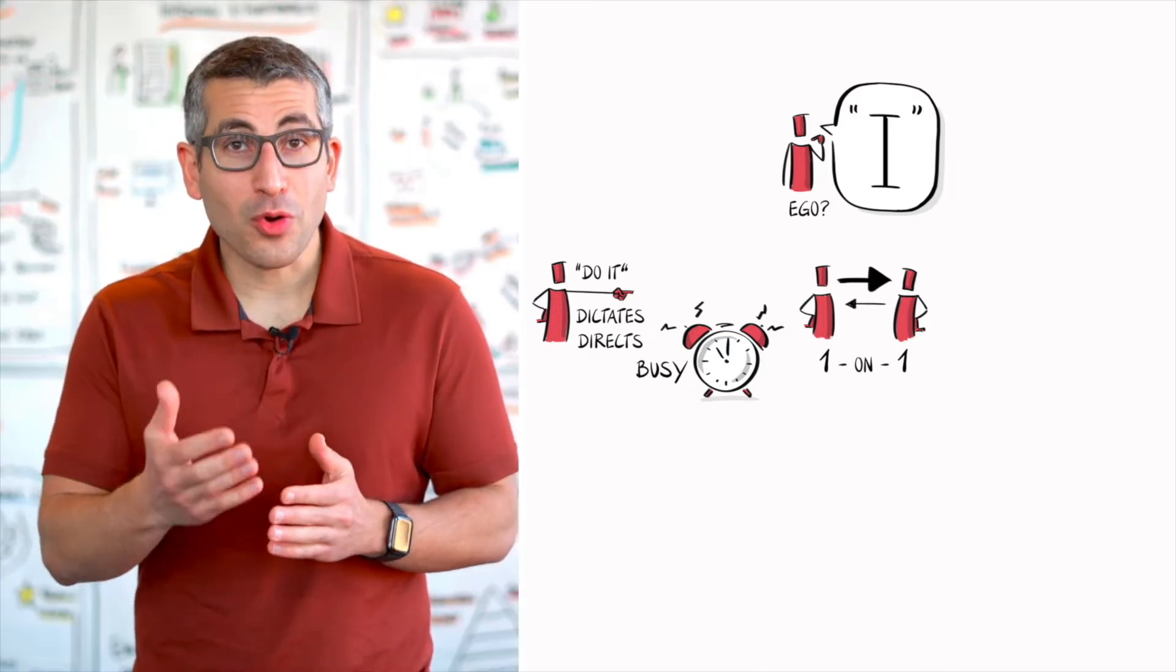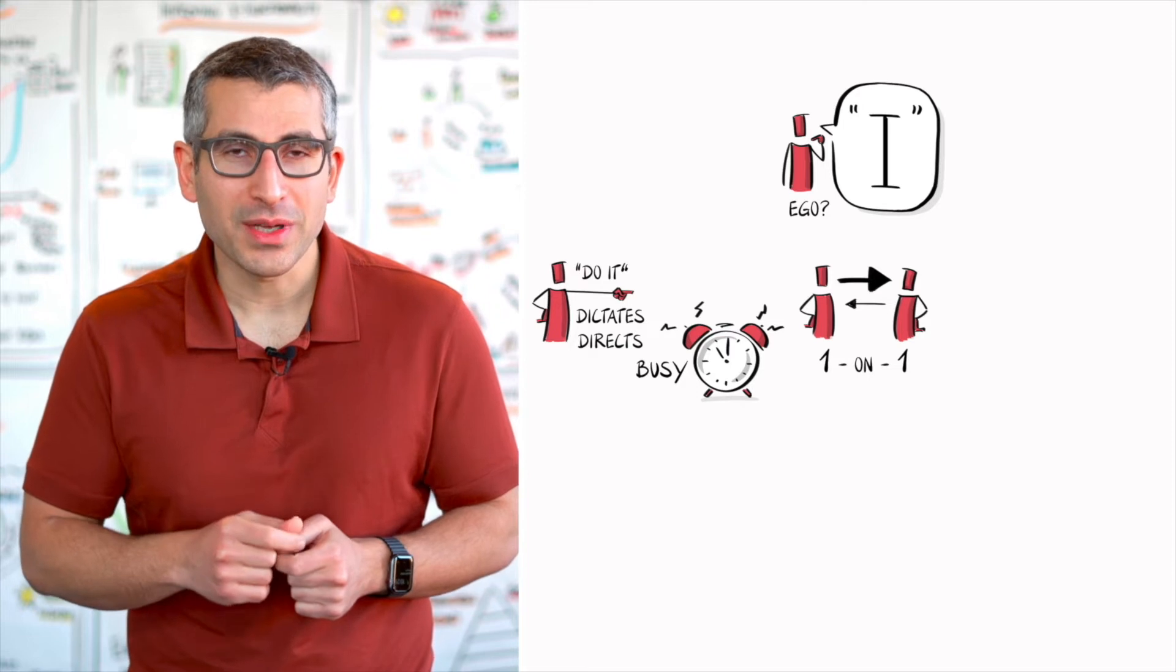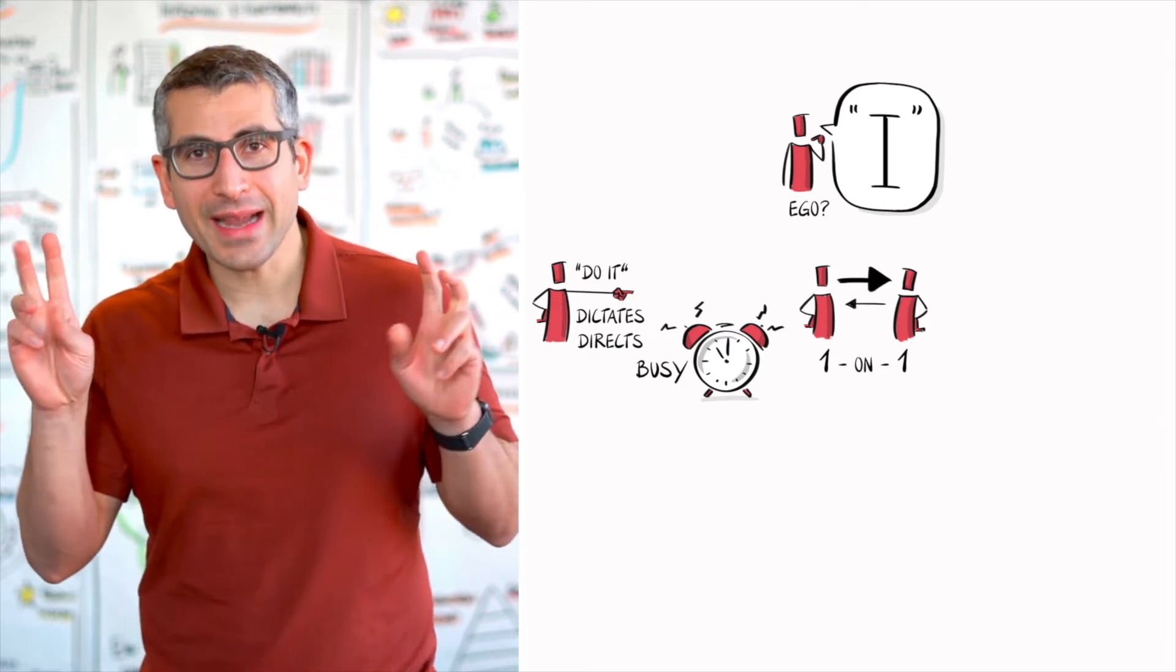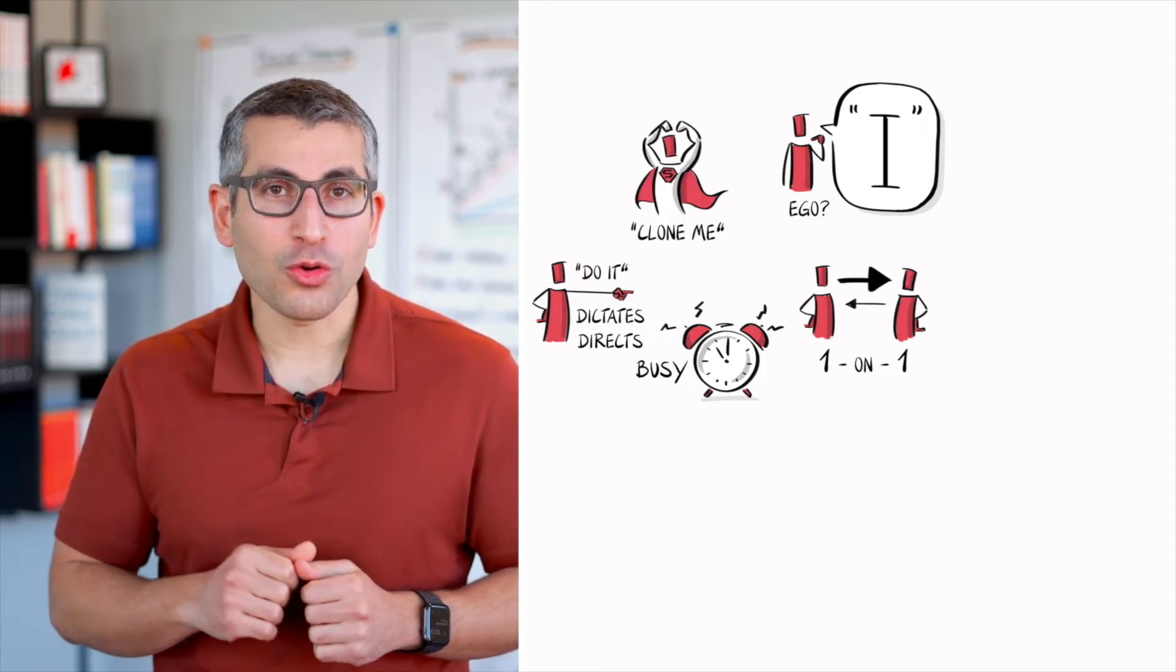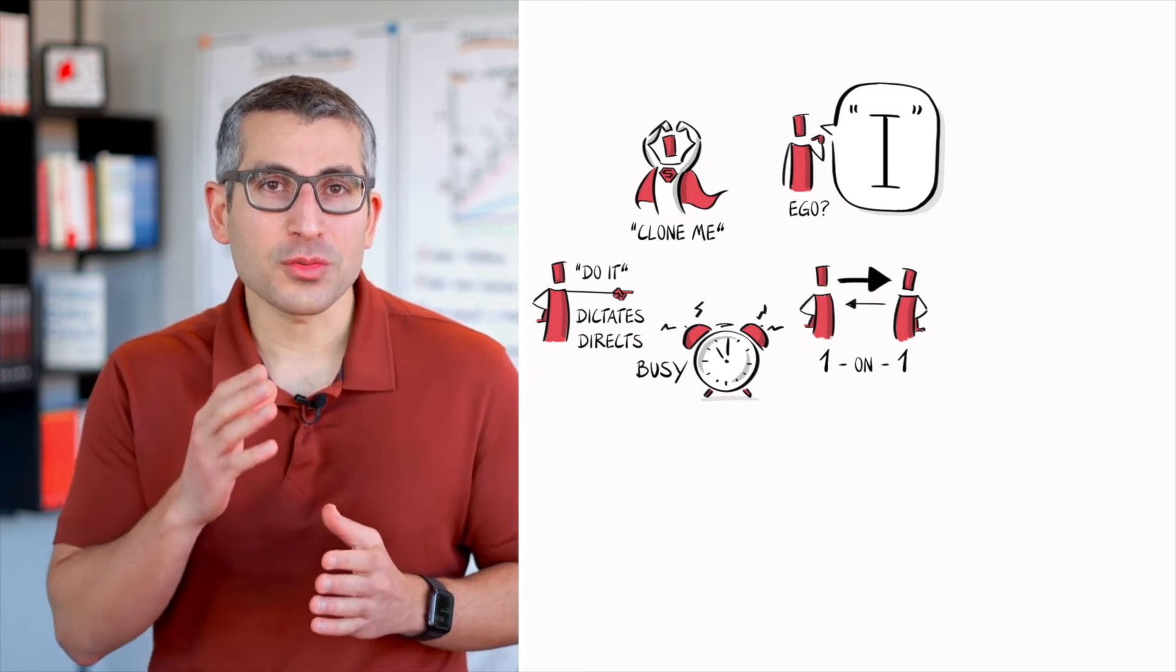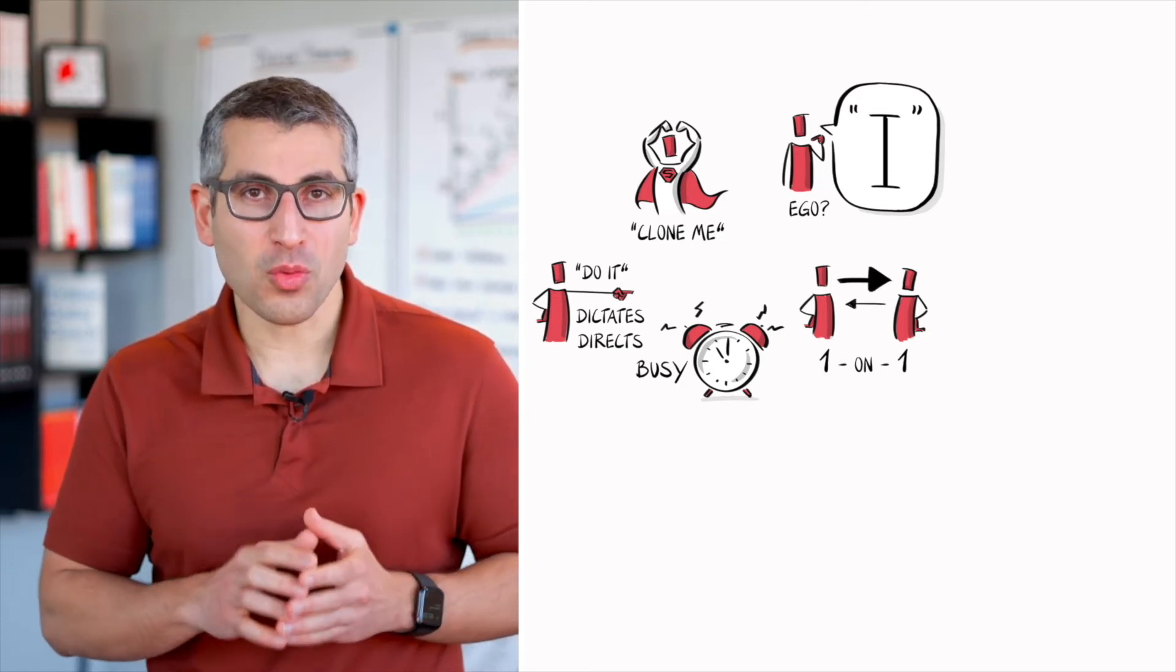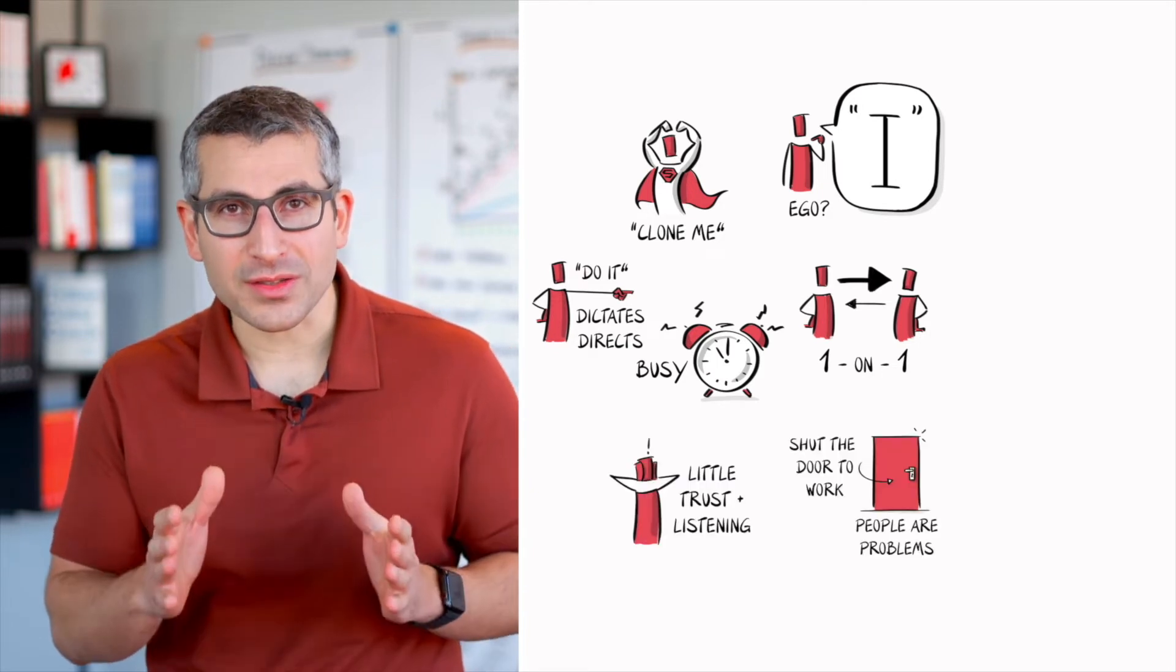Before we go and explore some of the more positive characteristics of that specific leader, let's end the negative aspects with the final one. You probably remember the quote, I wish I could clone myself. That quote gives you hints in terms of two things. Number one, that leader seems to have very little trust into their people.